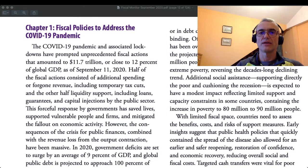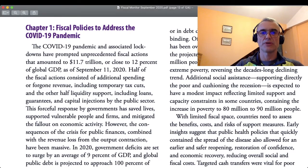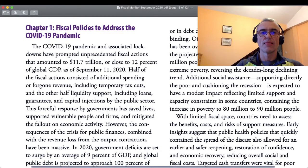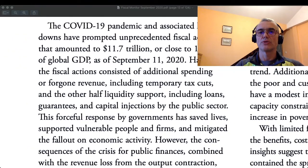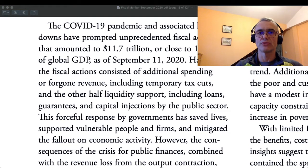I will focus a little bit on that. It is important for you to understand that distinction — I will even magnify this specific paragraph. So you have fiscal actions consisting of additional spending or foregone revenue, including temporary tax cuts, and the other half liquidity support, including loans, guarantees and capital injections by the public sector.